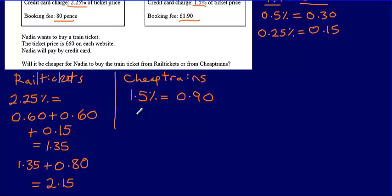For Cheap Trains, this is going to be the 90p, which is the 1.5% of the ticket price, plus the booking fee, which is £1.90. So I'm going to have to add those together, the 90p, the credit card charge, plus the booking fee of £1.90. And that is going to give me an answer of £2.80.